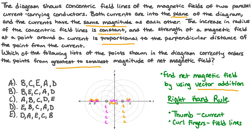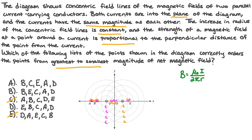Point D is in the middle of the wires, and since the magnitude of the magnetic fields is being subtracted at this position, the net magnetic field at point D is zero. With the net magnetic field at point D being the smallest, we can eliminate any answer choices that don't have D as the last letter — this eliminates answer choices C and E. To differentiate between the other points, we need to remember the equation for the magnetic field around a current-carrying wire: B = mu-naught times I divided by 2πr, where r is the distance between the position and the wire. Since the current I of both wires is the same, and mu-naught and 2π are constants, the magnetic field is proportional to 1/r.